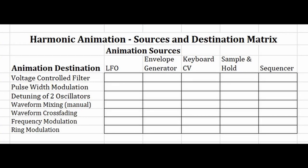Previously in Harmonic Animation we've looked at what harmonic animation is. In part one we looked at a filter sweep using a filter to animate the harmonics, and we looked at pulse width modulation with various ways of animating the pulse width. In part two we took that further looking at LFOs, envelope generators, sequencers, sample and hold, and keyboard CV as sources of control voltages for those different animation destinations.